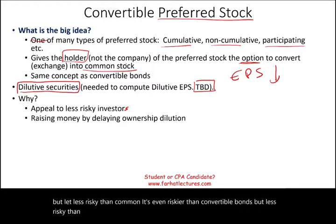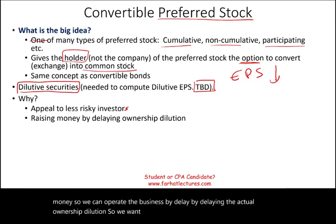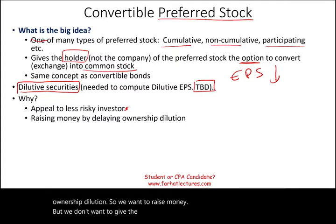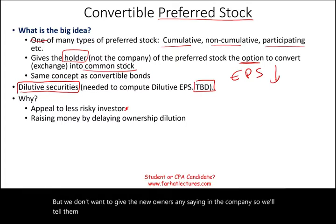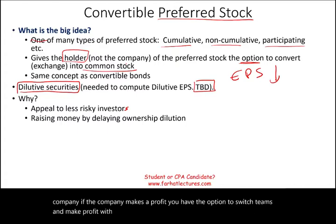Also, you want to raise money. The company wants to bring in money to operate the business by delaying the actual ownership dilution. We want to raise money, but we don't want to give the new owners any say in the company. So we tell them: give us the money now, buy our preferred stock, and if you like the company and the company makes a profit, you have the option to switch teams and make a profit with us as a common shareholder.